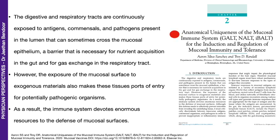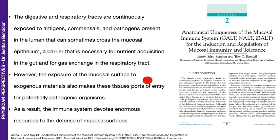This is an interesting publication from 2020 on the anatomical uniqueness of the mucosal immune system. The digestive and respiratory tracts are continuously exposed to antigens, commensals, and pathogens present in the lumen that can sometimes cross the mucosal epithelium. A barrier is therefore necessary for nutrient acquisition in the gut from food and for gas exchange in the respiratory tract. The exposure of the mucosal surface to exogenous materials also makes them a port of entry for potentially pathogenic organisms or antigens that can cause harm to the body. As a result, the immune system devotes enormous resources to the defense of such mucosal surfaces.